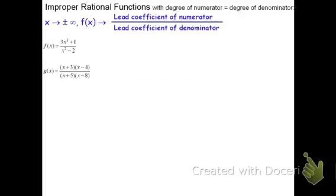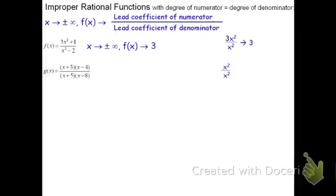Now for the next set — the improper rational functions where the degree of the numerator is equal to the degree of the denominator — we're going to go through and set up something similar. The end behavior is really determined by the highest degree exponents. So in this f, we have a 3x squared over an x squared. When I reduce that, the x squared terms cancel, and you're really left with an end behavior of 3. So as x approaches either positive or negative infinity, you're going to have a horizontal asymptote where it flattens out at 3 — the asymptote would be y equals 3. For g, if we multiplied it out, we'd have x squared on top and x squared on the bottom. When you reduce that, it becomes 1. So the end behavior here is as x goes to positive or negative infinity, f is going to go to 1, with a horizontal asymptote where y equals 1.